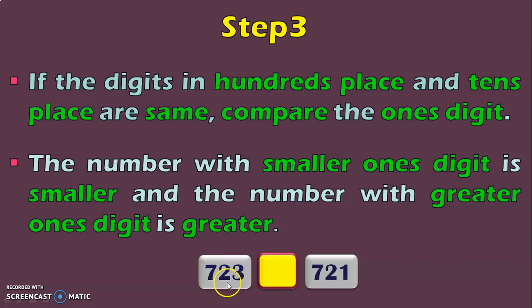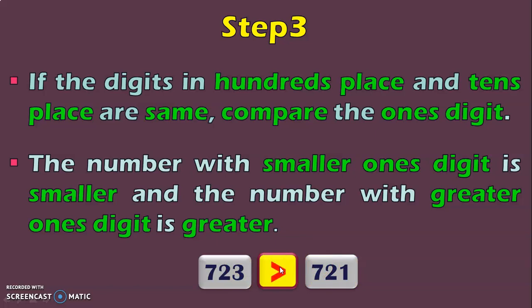Let us see this with an example. Here we have 723 to be compared with 721. In the hundreds place and tens place we have the same numbers 7 and 2. So next, move on to the ones digit which has 3 and 1. We know that 3 is greater than 1, so you can conclude 723 is greater than 721.